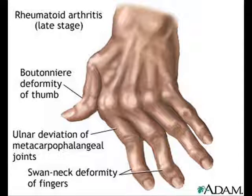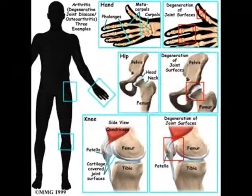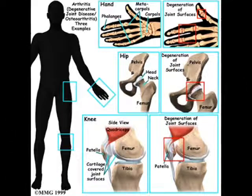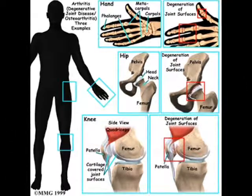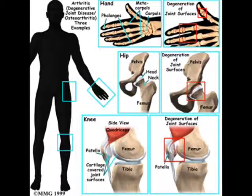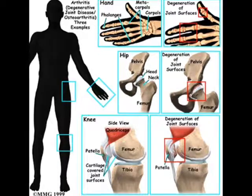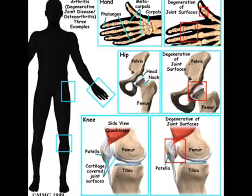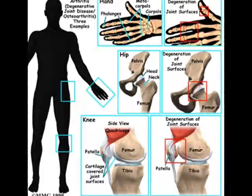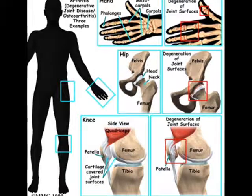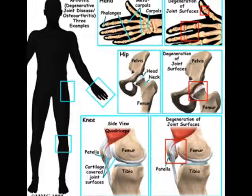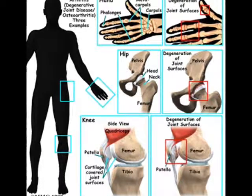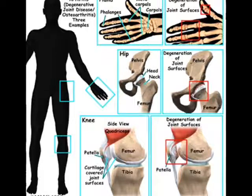The cartilage in the temporomandibular joints isn't as strong as the cartilage in other joints. Because osteoarthritis occurs mainly when the disc is missing or has developed holes, the person feels a grating sensation in the joint when opening and closing the mouth. When osteoarthritis is severe, the top of the jawbone flattens out and the person can't open the mouth wide.